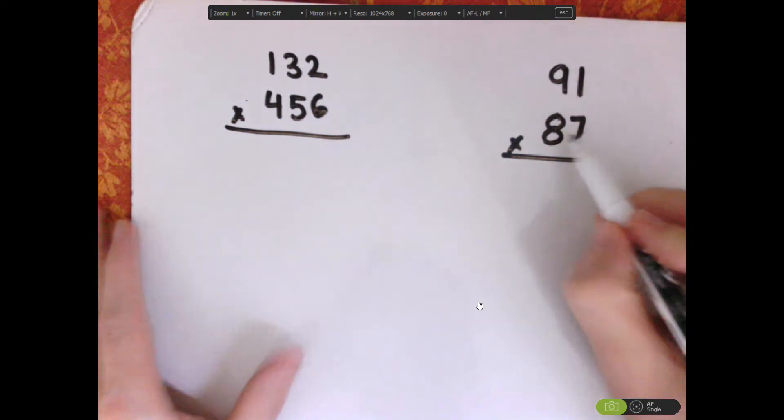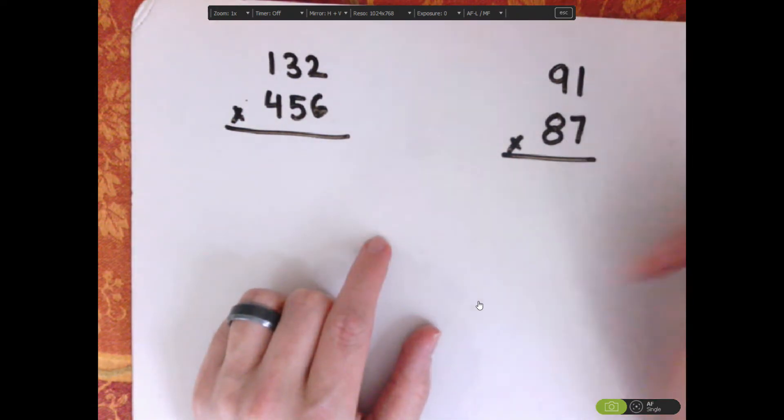Alright, so let's do the two digits by two digits first for the criss-cross method. First, do the vertical, so 1 times 7 is 7, write that down.